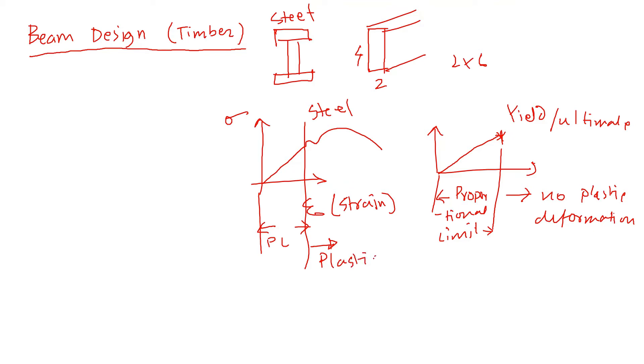In the steel case, if you remember, to calculate how big a size beam we need, we calculated Zx equals some factor of safety times M divided by the bending stress. We used Fy (yield point) converted using the factor of safety. But in wood it doesn't go under plastic deformation, so there is no property of plastic deformation.